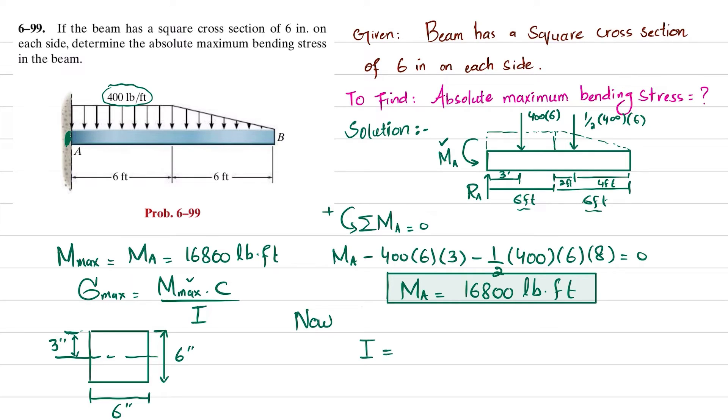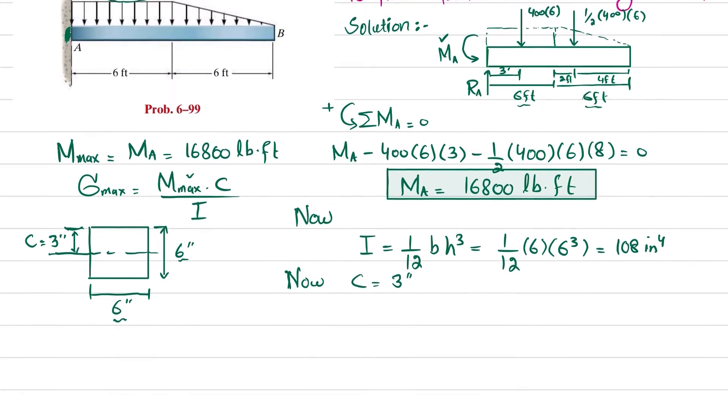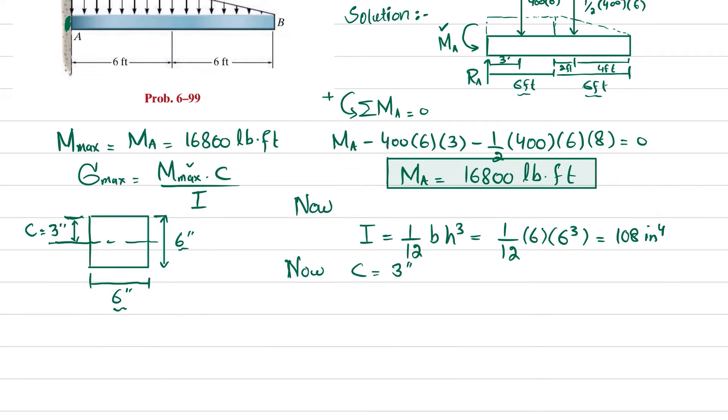For this cross-sectional moment, we know that I equals 1/12 times b times h cubed. So I equals 1/12 times 6 times 6 cubed. From here, the moment of inertia comes out to be 108 inch to the power 4. Now for c: from the diagram, c is the distance from the neutral axis to the topmost fiber. C equals 3 inches.